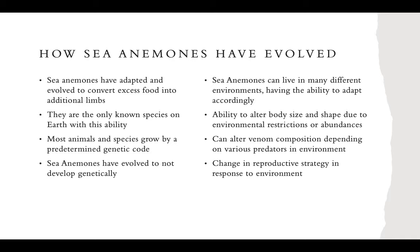So how did sea anemones evolve? Sea anemones have evolved to convert the food they eat directly into the growth of additional limbs or tentacles. Rather than storing excess energy as fat, as many other organisms do, that energy is used to add tentacles, which in turn help the anemone grab and search for additional food. The tentacles function like arms or legs — they reach out, grab things, and pull them into the mouth. This is the only species on Earth known to grow additional limbs directly from food intake.